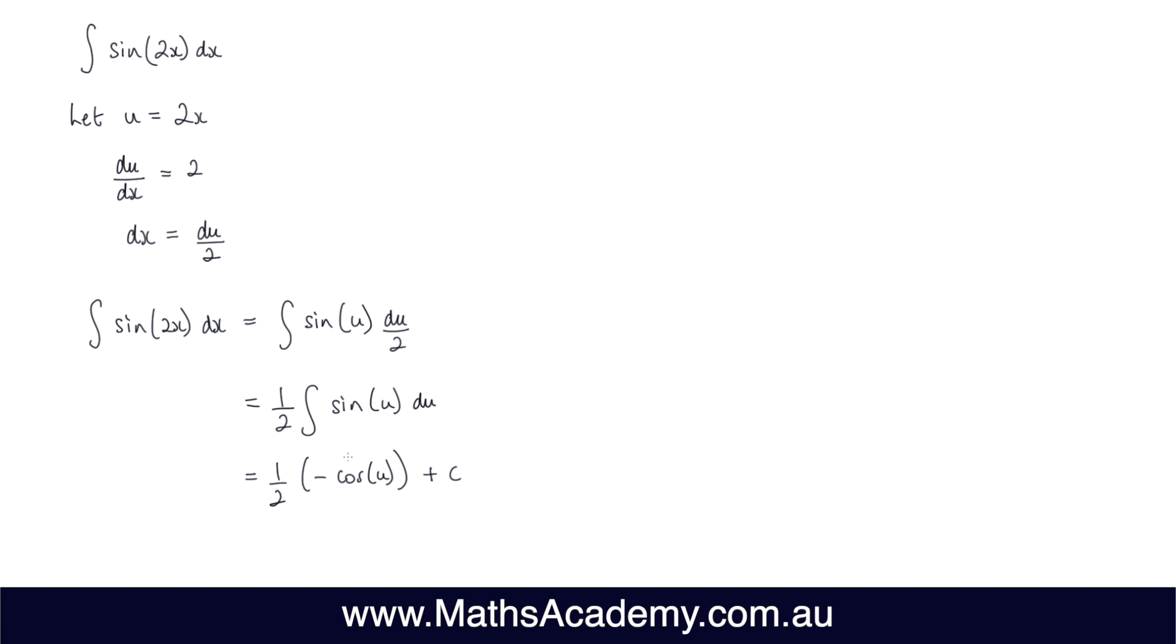Now, the next step, let's expand this bracket here. I'll do it over here. So we've got this one and this negative. So we've got negative cosine of u and that's over 2 plus the constant of integration.